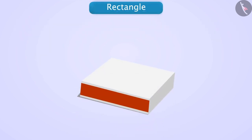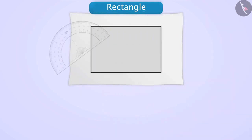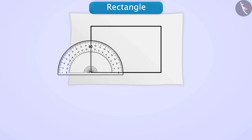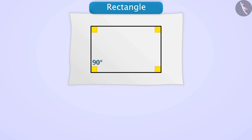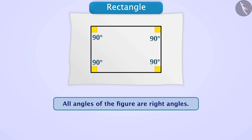Rectangle. Take a matchbox and observe any one of its flat surfaces. You will see a quadrilateral. Place it on a paper and draw its outline. Now find the measure of each angle with the help of a protractor. You will find that each angle is 90 degrees, which means that each angle in this figure is a right angle.